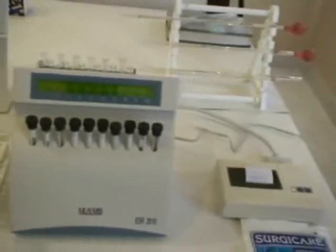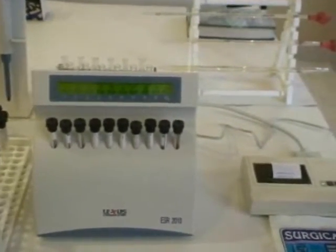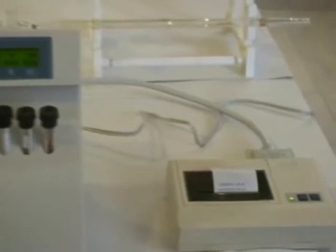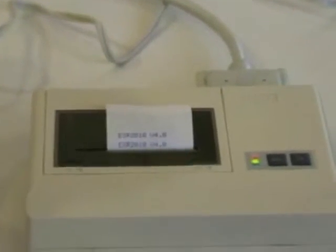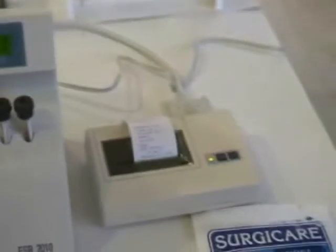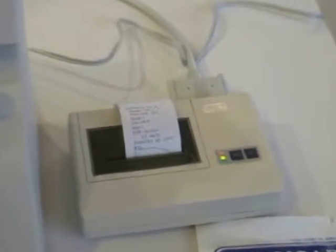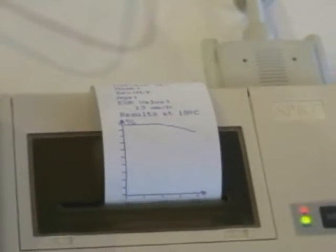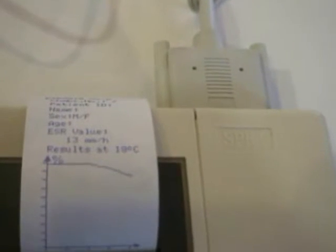At the end of 30 minutes for the first test at chamber number 7, the result is displayed on the LCD. Simultaneously the result is also obtained in the printer in the form of a graphical representation. The printed result features the chamber number, the ESR results at 18 degrees Celsius with the result kinetics in the form of a graph.